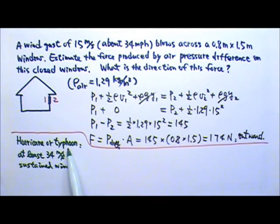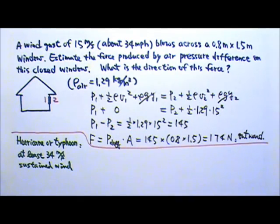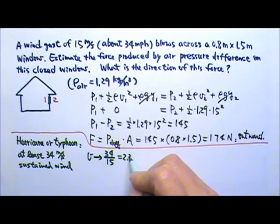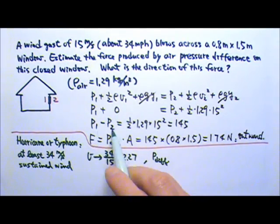A hurricane or typhoon has at least 34 meters per second sustained wind. This is 34 meters per second, not 34 miles per hour. That means the speed compared to that wind gust we just looked at is a factor of 34 divided by 15, which is about 2.27.